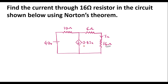Since the circuit consists of dependent sources, we are supposed to calculate three parameters in Norton's theorem: the open circuit voltage VTH (also known as VOC), the short circuit current ISC, and the Norton resistance RN.